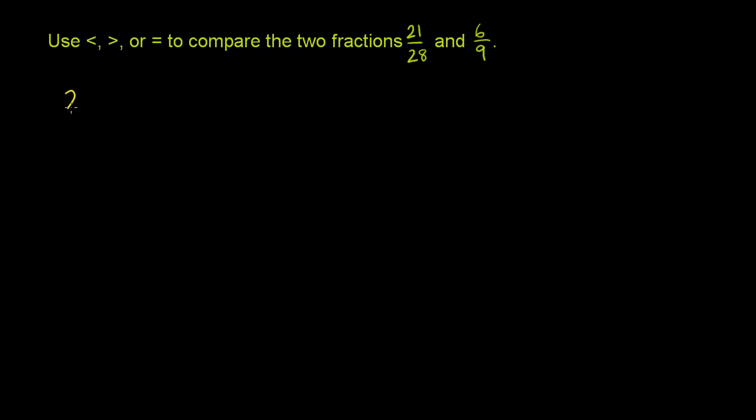So 21 over 28, if we want to put this in simplified form, 21 is the same thing as 3 times 7. 28 is the same thing as 4 times 7. They're both divisible by 7.